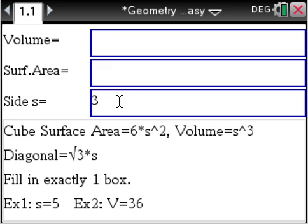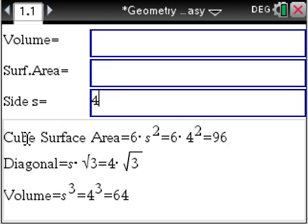Let's say the side is 4. All your answers, given to you right there. Cube surface area, diagonal, volume. Answer, answer, and answer. Make the sides 5. Boom, boom, and boom.